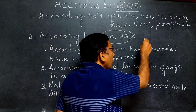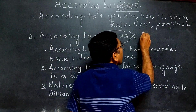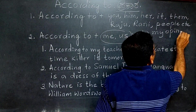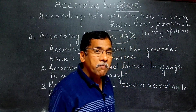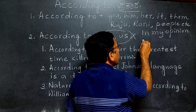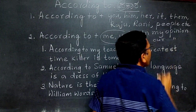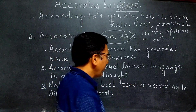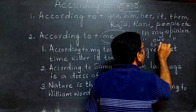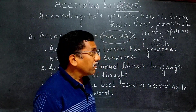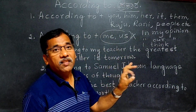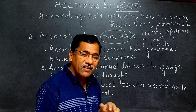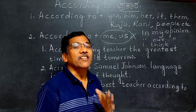Instead of 'according to me' — meaning nanna prakara — you should say 'in my opinion' or 'nanna abhiprayad alli.' Similarly, instead of 'according to us,' say 'in our opinion' — namma abhiprayad alli. Using 'according to me' or 'according to us' goes wrong in English. Clear?